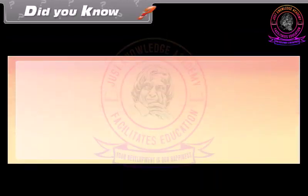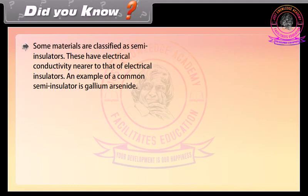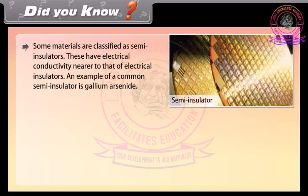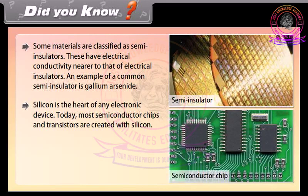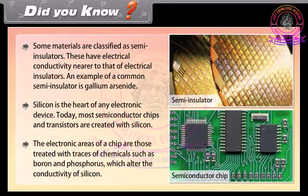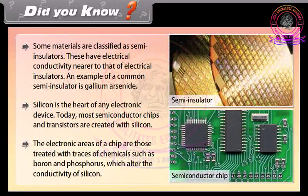Did you know? Some materials are classified as semi-insulators, having electrical conductivity nearer to that of electrical insulators. An example of a common semi-insulator is gallium arsenide. Silicon is the heart of any electronic device. Today, most semiconductor chips and transistors are created with silicon. The electronic areas of a chip are treated with traces of chemicals such as boron and phosphorus, which alter the conductivity of silicon.